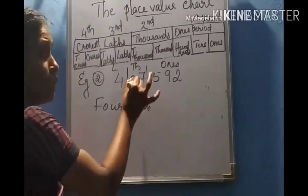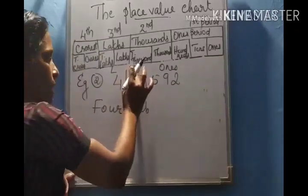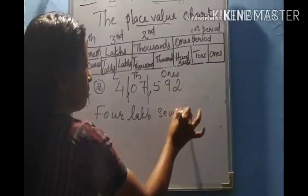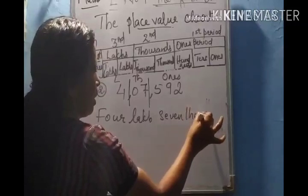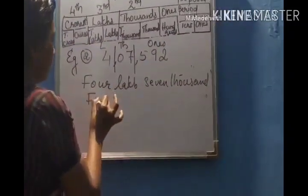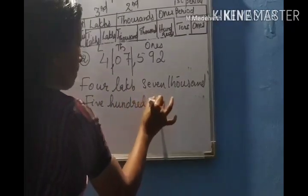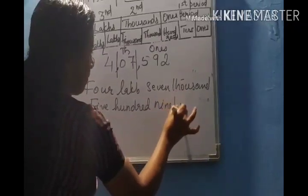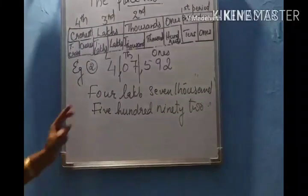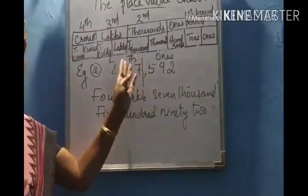How many thousands? Zero, seven. We don't have to mention zero — we will write only seven thousand. Four lakhs, seven thousand. How many ones? Five hundred and ninety-two. Remember, if anywhere zero comes in between, we don't have to read it as zero seven — we will read only as seven.